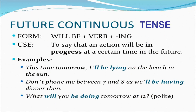Now we are going to learn future continuous tense. In simple future tense we wrote 'will' plus the root form of the verb. Here, we have to write 'will be' plus verb plus '-ing.' The use of future continuous tense is to say that an action will be in progress at a certain time in the future.